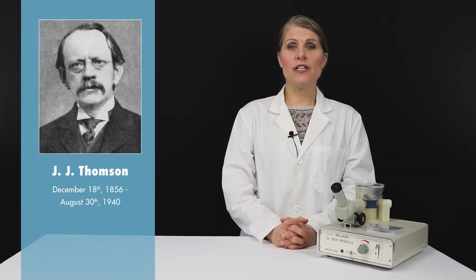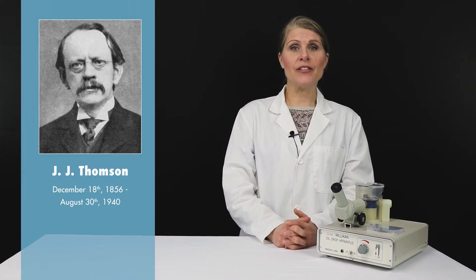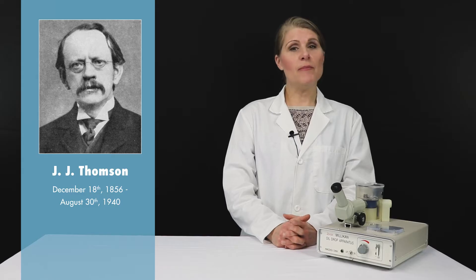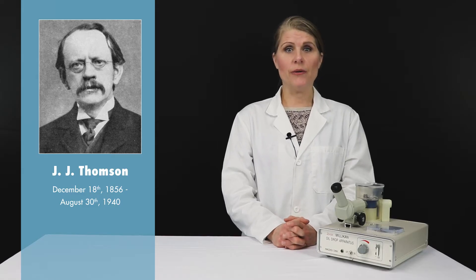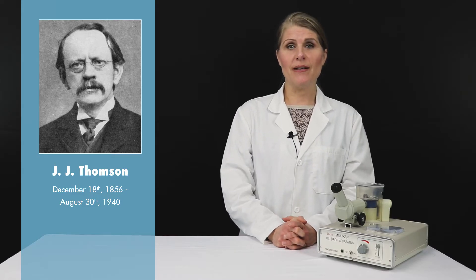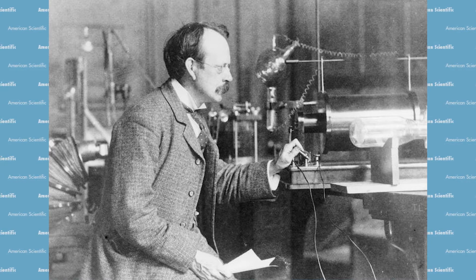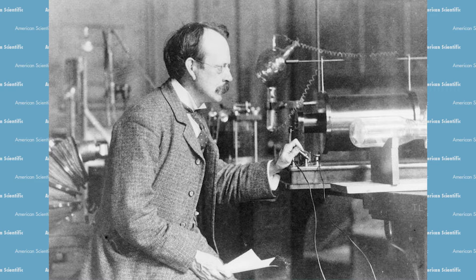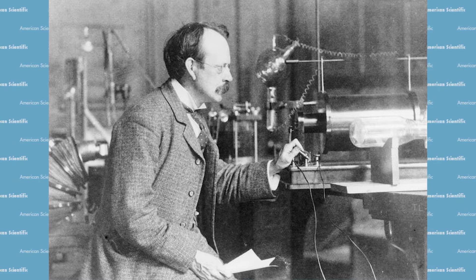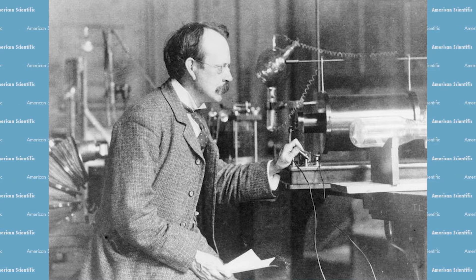In 1897, J.J. Thompson discovered the electron and measured its charge-to-mass ratio using the cathode ray tube experiment. Thompson and others tried to measure the charge of an electron using clouds of charged water droplets, observing how fast the water droplets fell under the influence of gravity and an electric field.